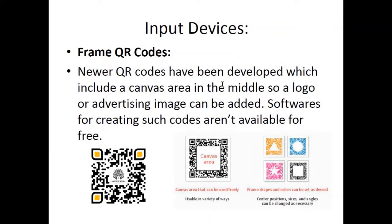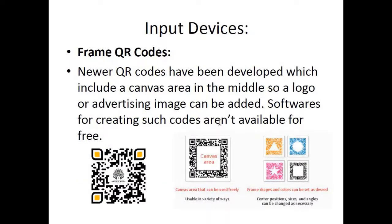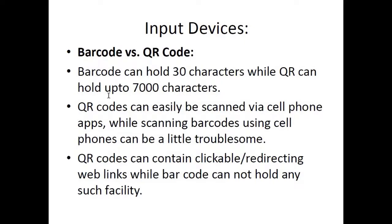Frame QR codes are something new in the updated syllabus. Newer QR codes have been developed which include a canvas area in the middle, so a logo or advertising image can be added. The canvas area can be in different shapes — triangular, circular, star-shaped — where you can place logos. Software for creating such codes is not available for free, whereas normal QR codes and barcodes can be generated for free using different software or online tools.